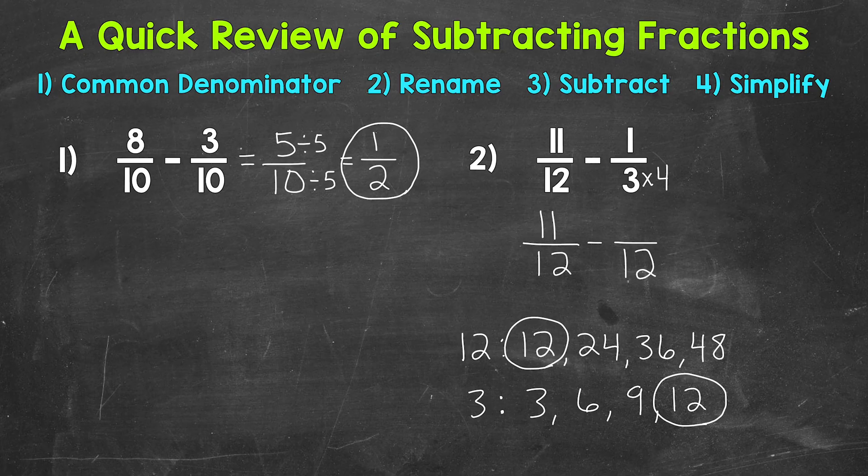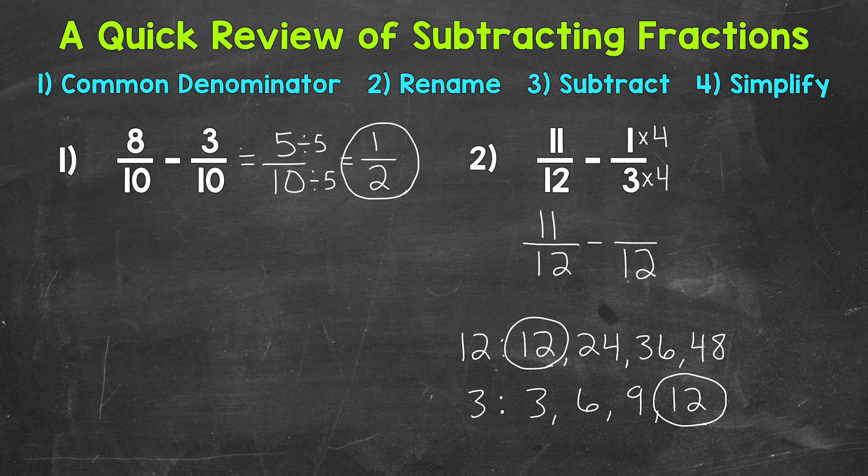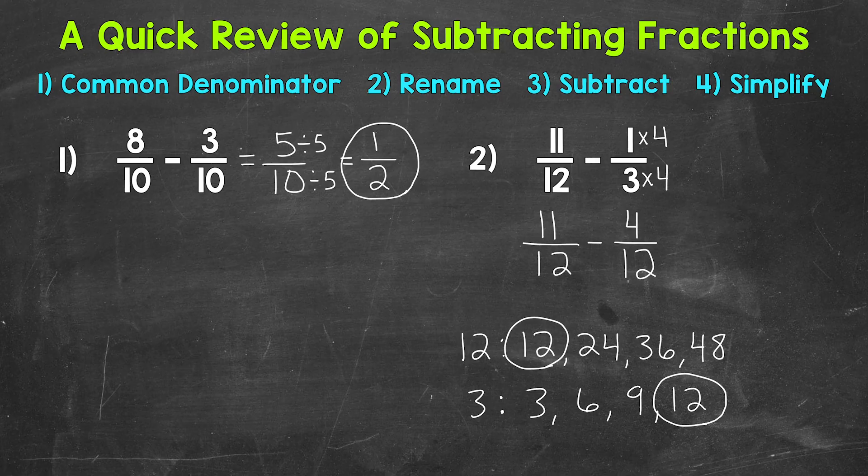Whatever we do to the bottom, we have to do to the top in order to keep this equivalent. So 1 times 4 is 4. 4/12 is equivalent to 1/3. So again, we're not changing the value of the problem at all because we're working with equivalent fractions.